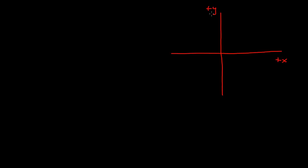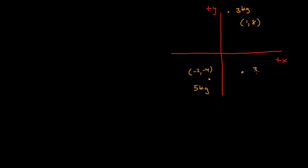Let's do an example. Here's my two-dimensional plane with plus x and plus y. I have three objects: one of mass 3 kg at position (1, 8); another of 5 kg at position (−2, −4); and a third of 2 kg at position (3, −3) — positive three in x, negative three in y.